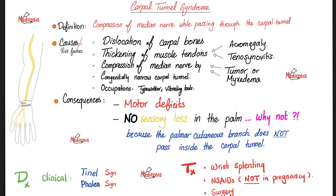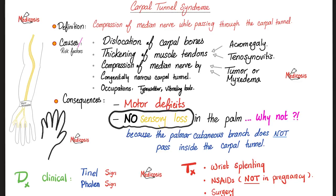An important point: do we have tingling and numbness in carpal tunnel syndrome? Yes — so there are sensory symptoms, but there is no sensory loss. If you ask the patient to close their eyes and you touch the lateral three and a half fingers in the distribution of the median nerve, the patient can still feel it. This is because the palmar cutaneous branch of the median nerve does not pass within the carpal tunnel under the flexor retinaculum — it is spared in carpal tunnel syndrome.